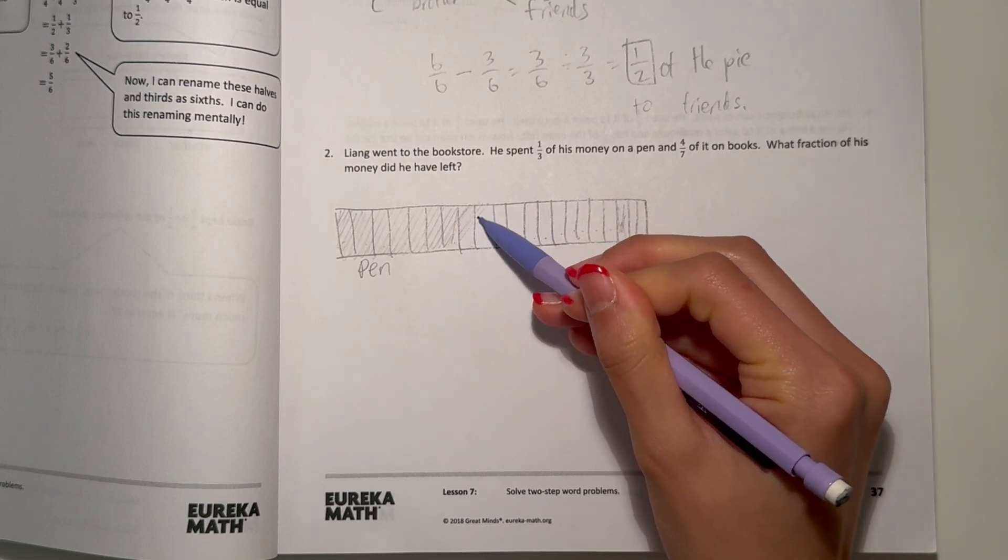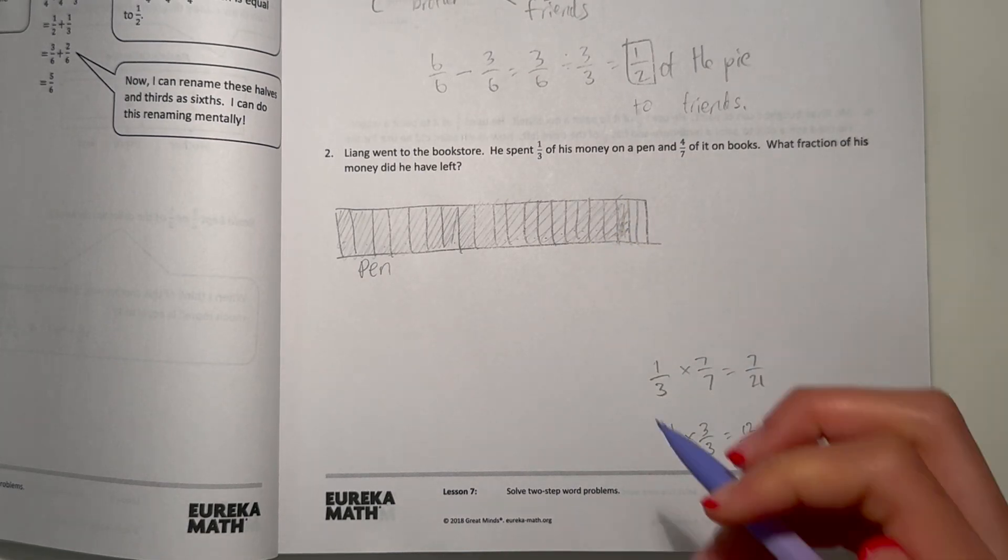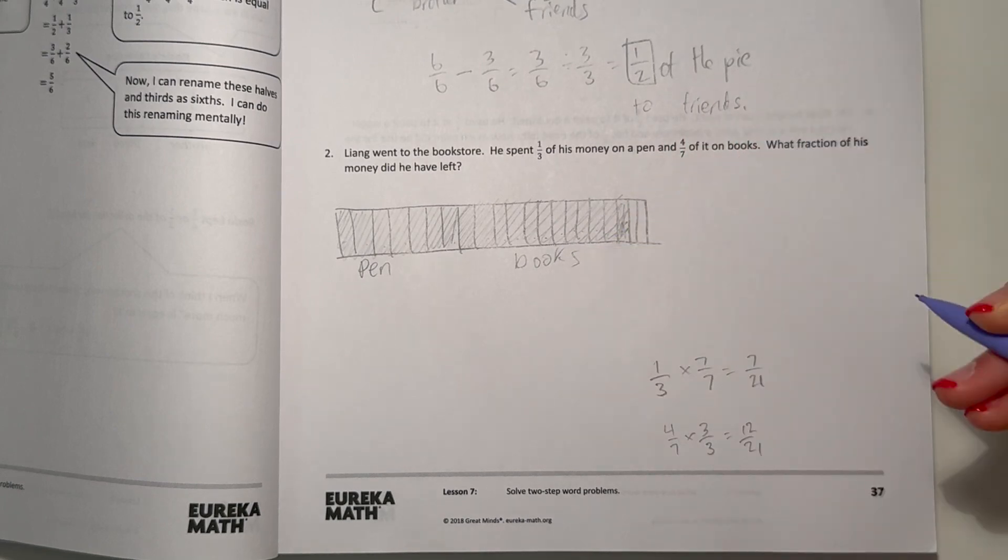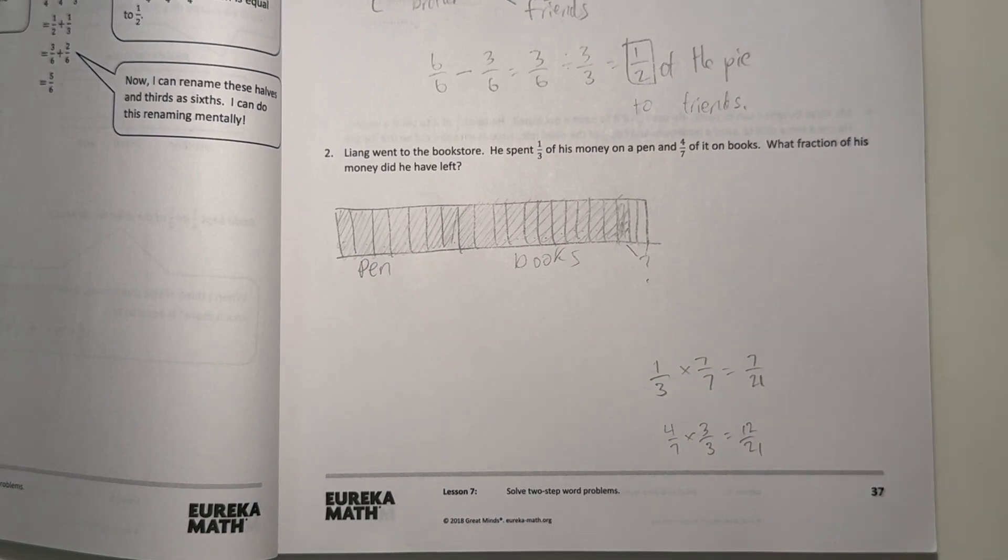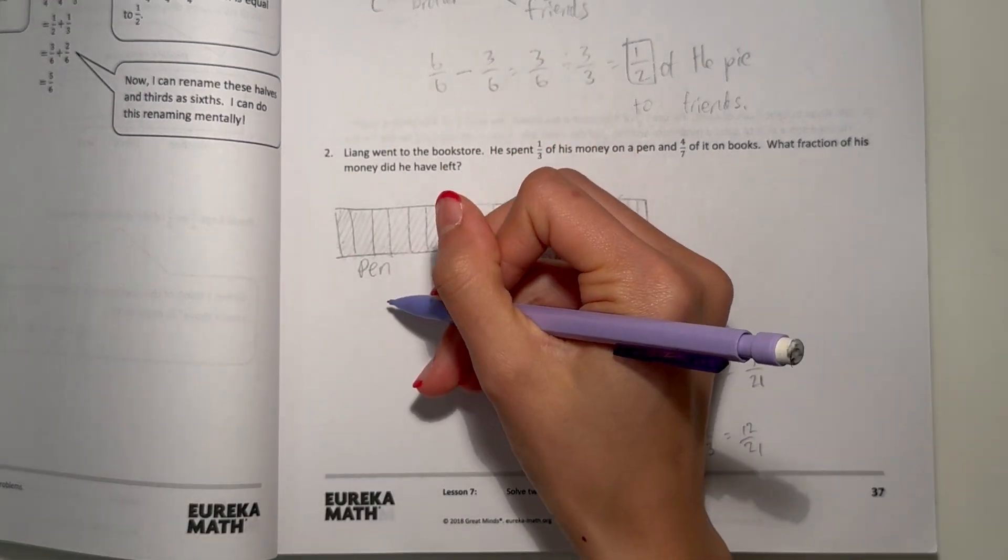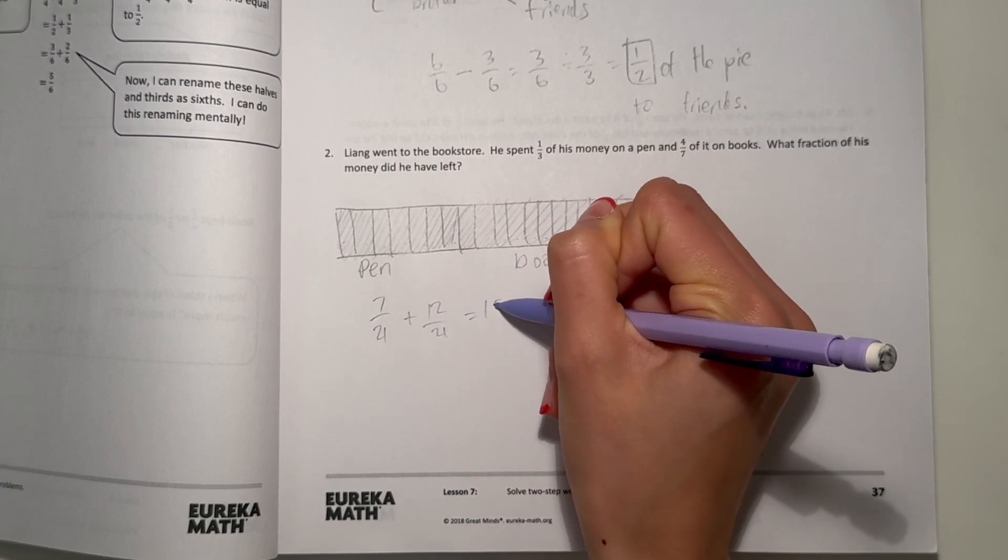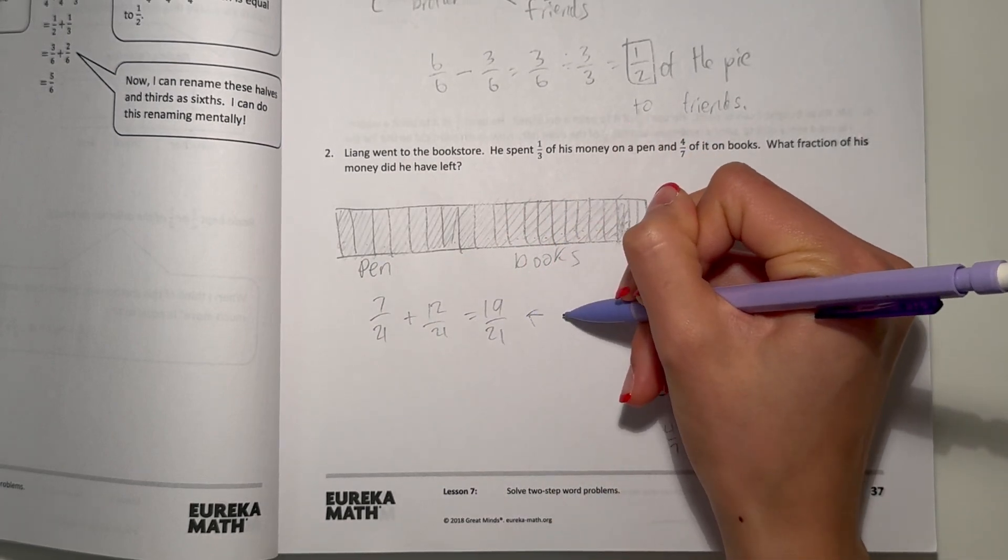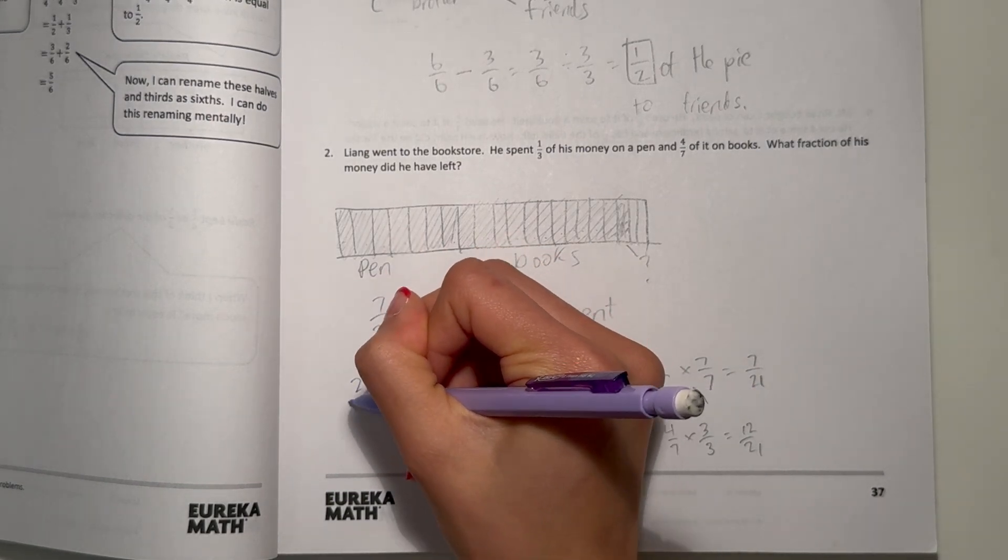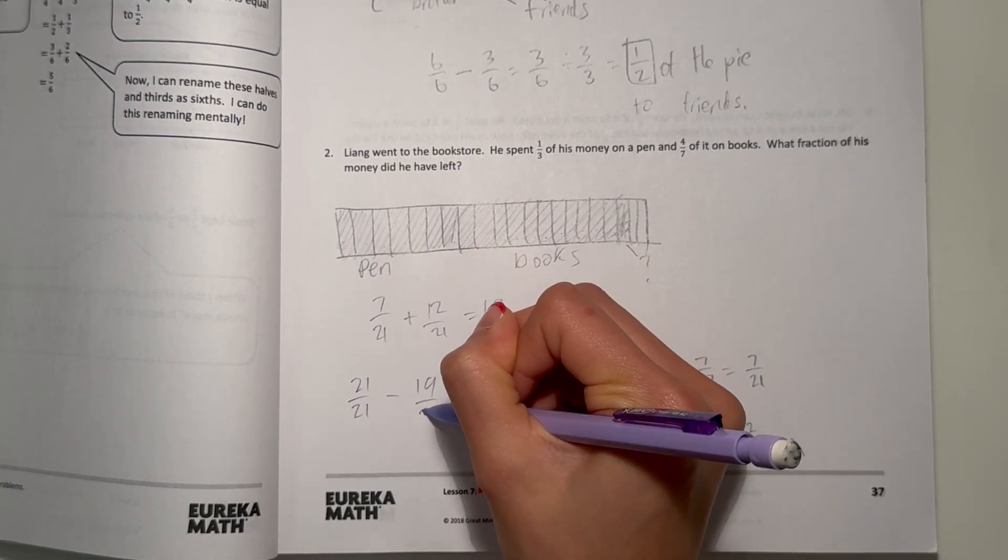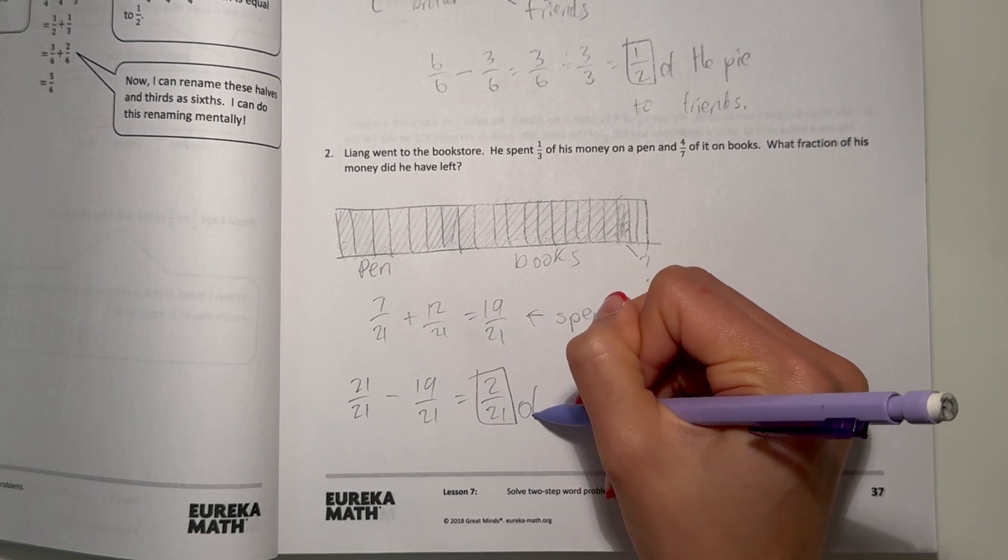So, seven out of twenty-one was spent on the pen, and this is how much is left over. So, after he spent seven over twenty-one plus twelve over twenty-one, that's nineteen out of twenty-one. This is how much he spent. So, to find out how much he has left, his original twenty-one over twenty-one minus nineteen over twenty-one is two over twenty-one. So, that's how much he has left.